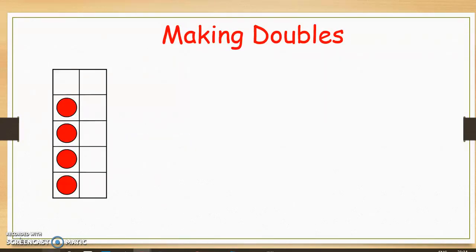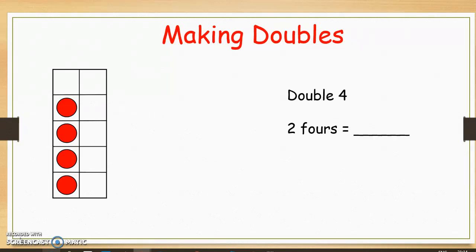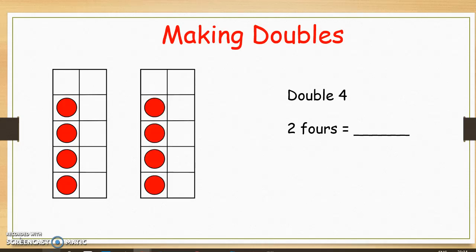Now let's look at how we can solve multiplication problems by making doubles. Here you see a ten frame. How many red dots are on the ten frame? There are four dots on the ten frame. Now what would double four be? Double means we are making two groups, so what is two groups of four equal to? Let's have a look. Look at the two ten frames — two fours equals eight.